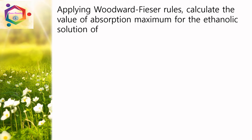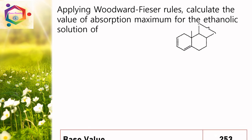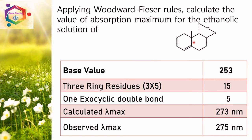Applying Woodward-Fisher rules, calculate the value of absorption maximum for the ethanolic solution of this compound. This is a homoannular diene with 3 ring residues and 1 exocyclic double bond. The base value of homoannular diene is 253; 3 ring residues: 3 × 5 = 15; 1 exocyclic double bond adds 5. Calculated lambda max value is 273 nm; observed lambda max value is 275 nm.